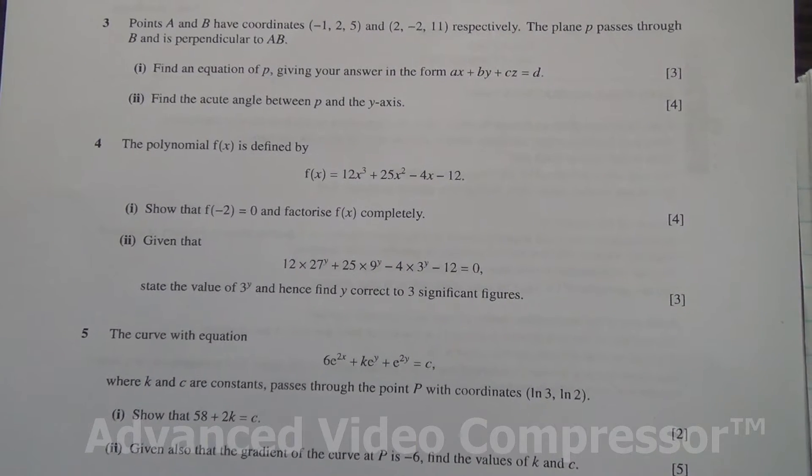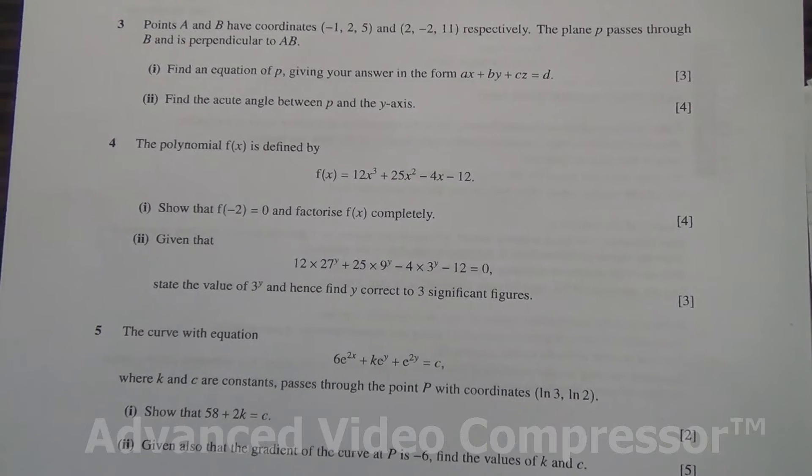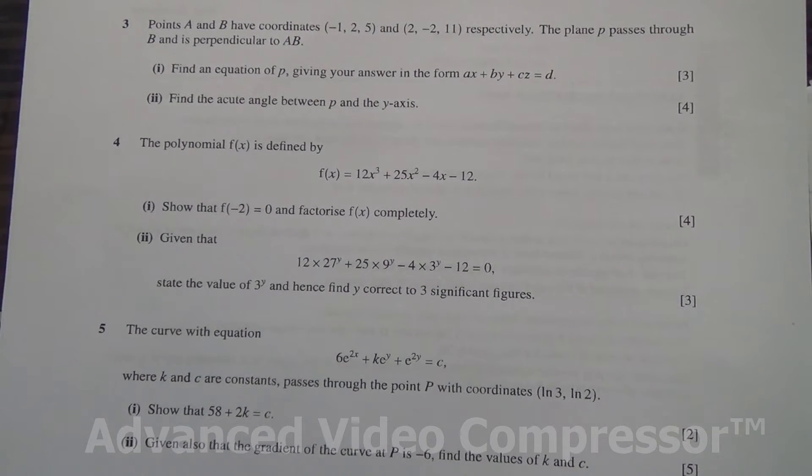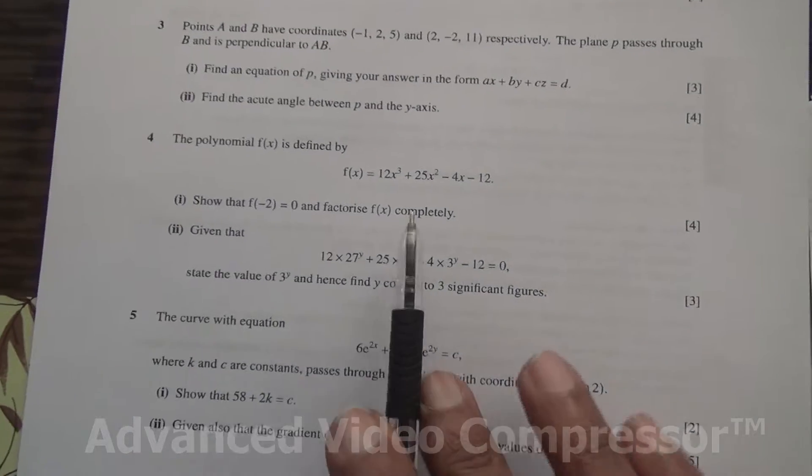Hi, question number 4. The polynomial f(x) is defined by f(x) equals 12x cubed plus 25x squared minus 4x minus 12. We need to show that f(-2) is equal to 0 and factorize f(x) completely.